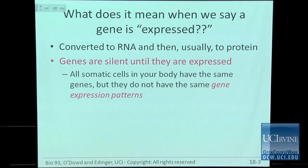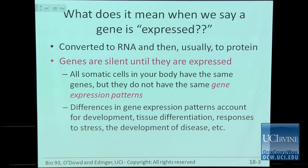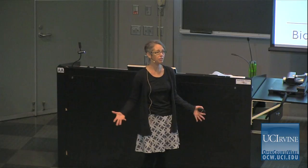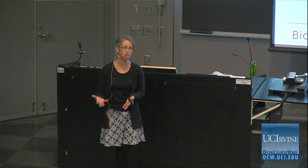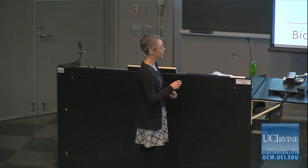All somatic cells in your body have the same genes, but they do not have the same gene expression patterns — that's what makes them different. Every cell in your body has the same genes, but which genes are expressed differs between cell types and under different conditions. Differences in gene expression patterns can account for development; you go from a zygote all the way up to an adult human with the same set of genes. Turning genes on and off in the right order is how you go from a single cell to 10 to 100 trillion cells. Tissue differentiation, responses to stress, and the development of disease all involve changes in gene expression. Cells are constantly trying to return to homeostasis, and the tool they have is to change gene expression.